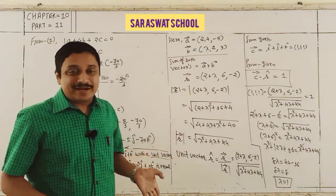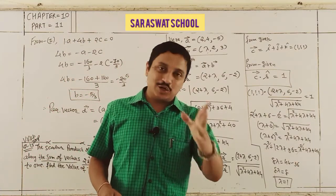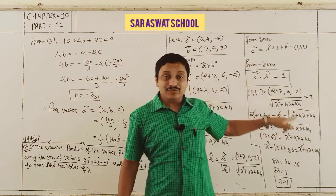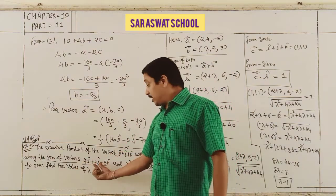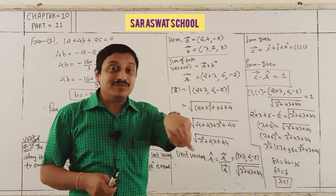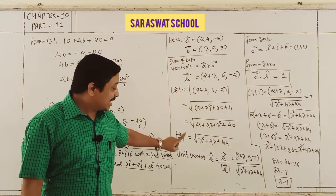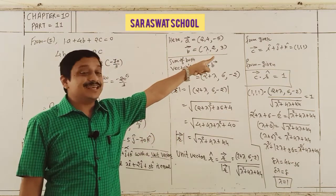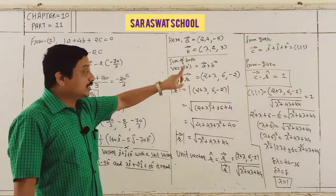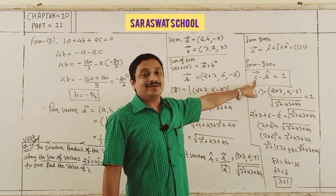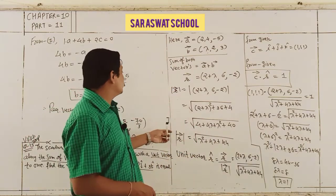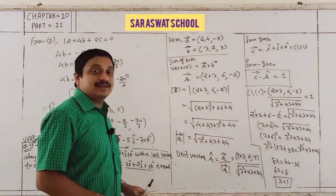Let me briefly recap: scalar product means dot product. I find the sum of both vectors, create the unit vector from the sum, take dot product with c = i + j + k, set equal to 1, simplify, and calculate. The value of λ = 1. Question 13 is done.